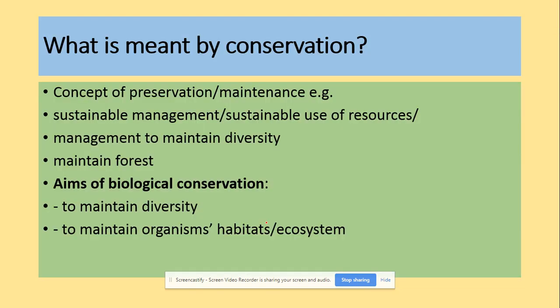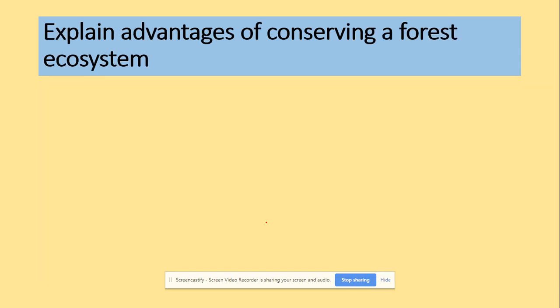So what is meant then by conservation? It's a concept of maintenance - could be the resource, could be the maintenance of the diversity, maintenance of the forest. And the aim of conservation is to maintain that diversity and to be an important part of the species.